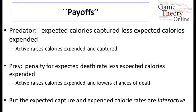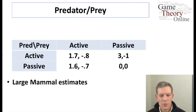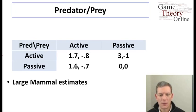The payoffs for the predator are tracked by expected calories captured minus expected calories expended. If active, you burn more calories chasing prey but also expect to capture more — so there's a tradeoff. For the prey, the payoff is tracked in terms of an expected penalty for death. If you're active, you have less chance of being caught but you're also burning more calories. The key point is that the expected calories burned and the expected rate of capture depend on the interaction between the strategies of both players.